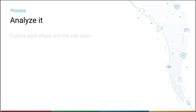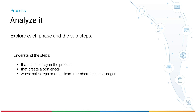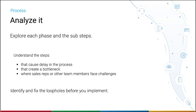Explore each phase in the process, as there may be sub-steps that could be missed out. Consult people who regularly use the process to get a better understanding of the steps involved — those that cause delay, that create a bottleneck, and where sales reps or other team members face challenges. Analyzing the business process will greatly help in identifying and fixing loopholes before you implement it in Zoho CRM.